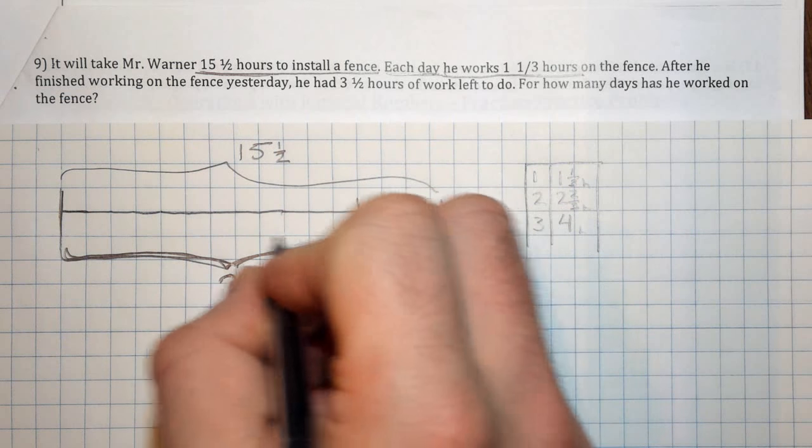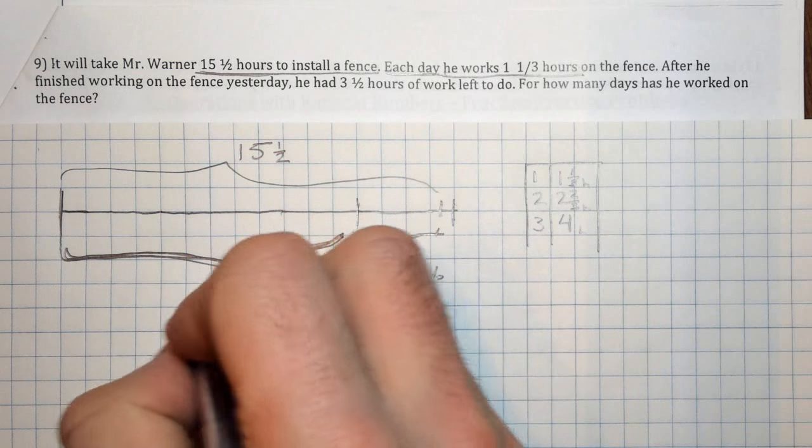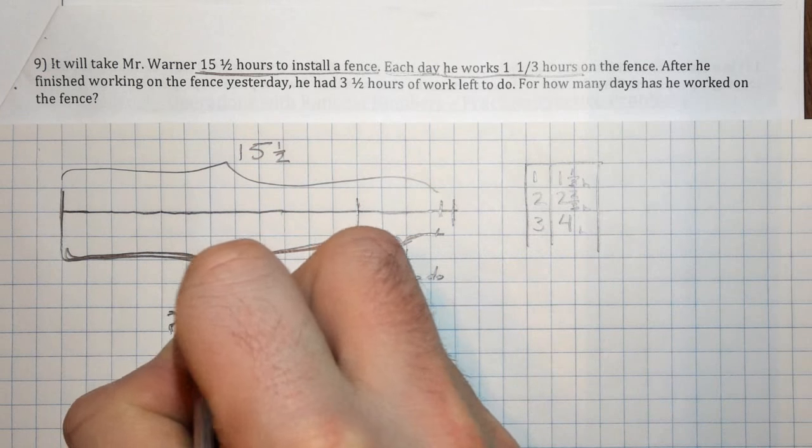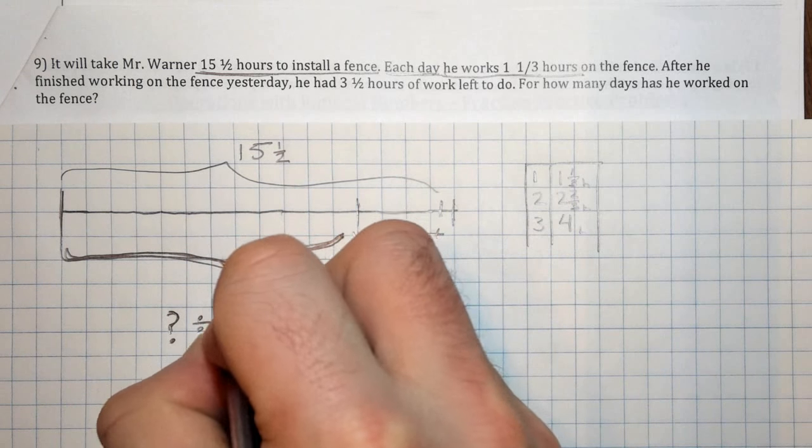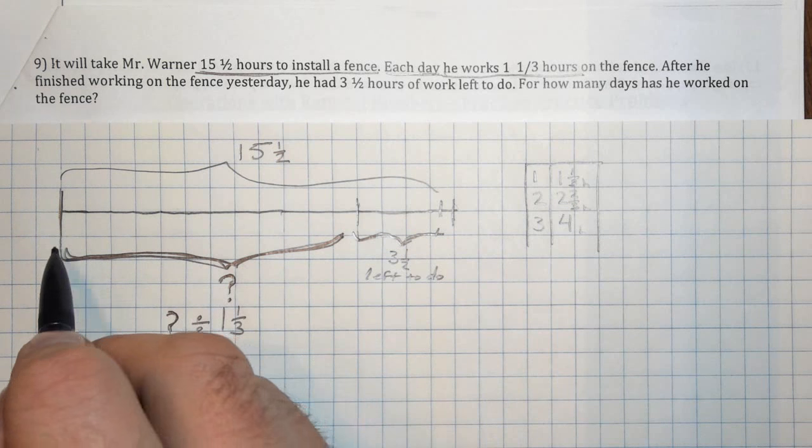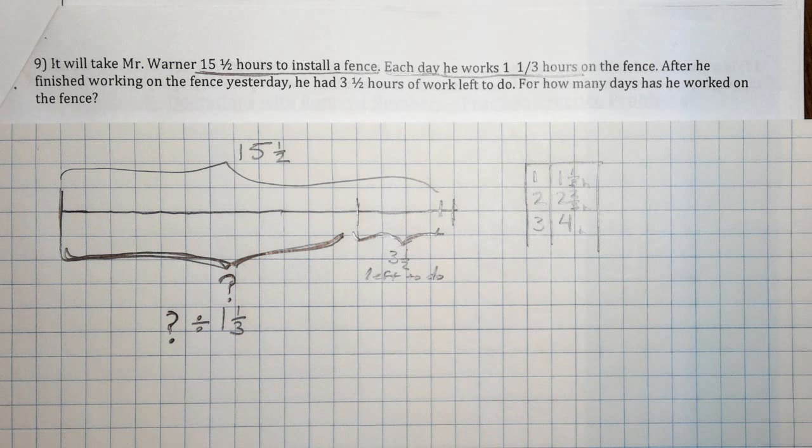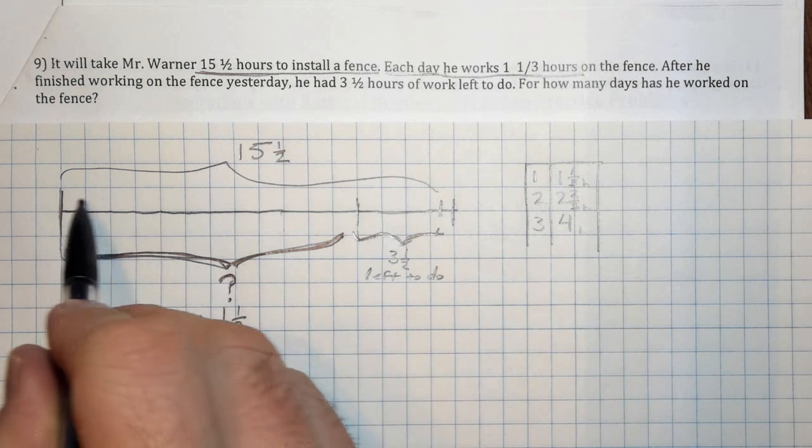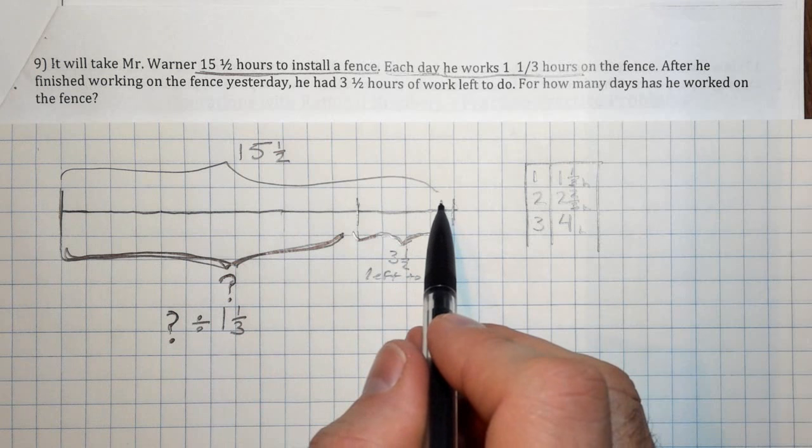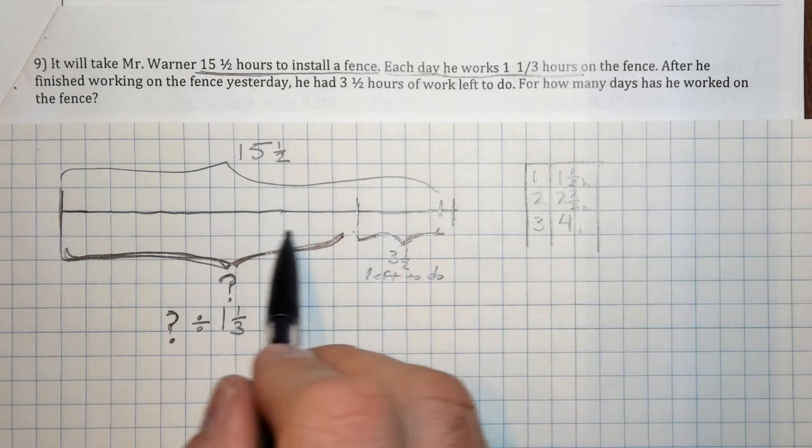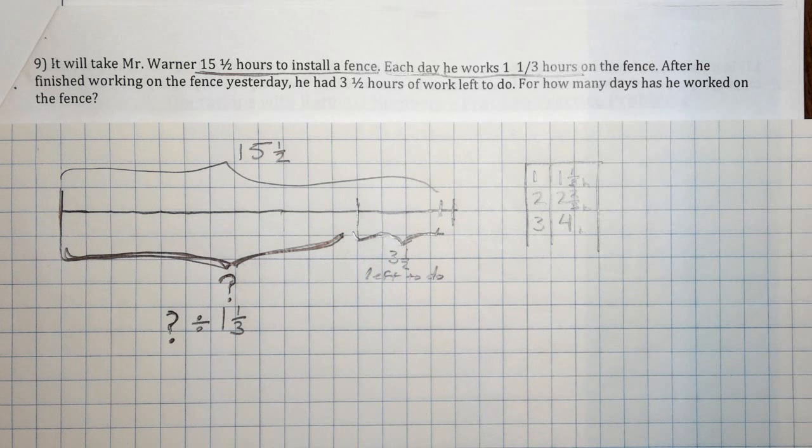So I need to know what is this portion? Because it's going to be this portion divided by one and one third. So the question right now is, how can I figure out what this portion is? Maybe you could pause the video right now and think, how can you figure out this portion? If you know the whole fence takes 15 and a half hours, and we have three and a half left, how can you figure out this portion?